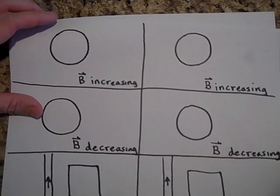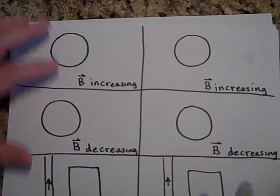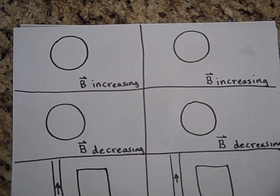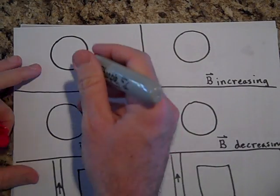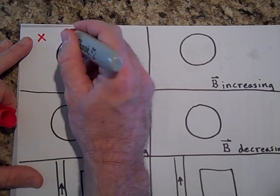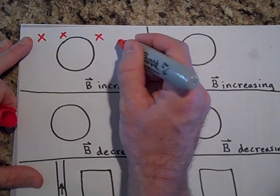Let's say we have a magnetic field — I'll put the magnetic fields in red. Let's say there are x's here, going like that.